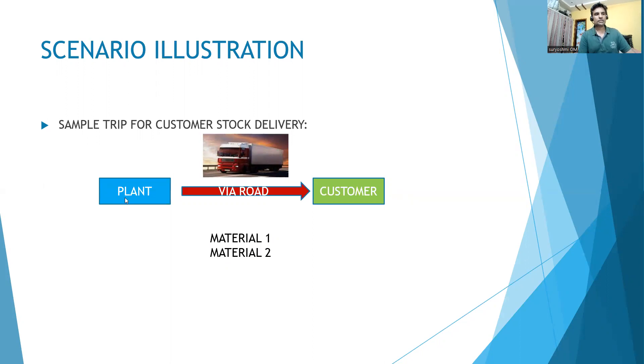If you would like to send stock from this plant, material one and two, suppose your customer ordered, we'll choose the mode of transport. For example, you can see this picture - this is via road, the truck sending to your customer. This is the sample example we'll see in our further discussions.